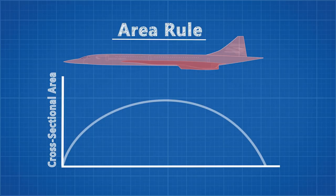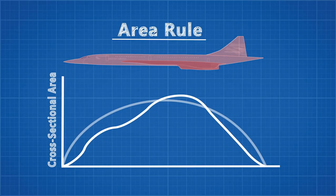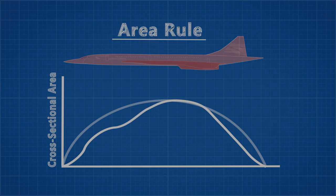In reality, planes never achieve this ideal distribution. The Concorde's distribution looked similar to this and could have been closer to the ideal had they tapered the fuselage over the wing, but more on that later.